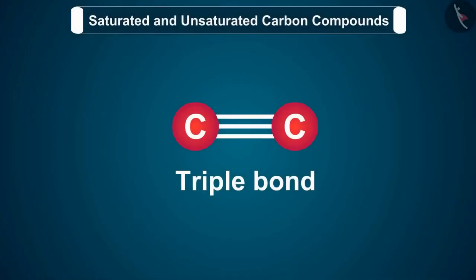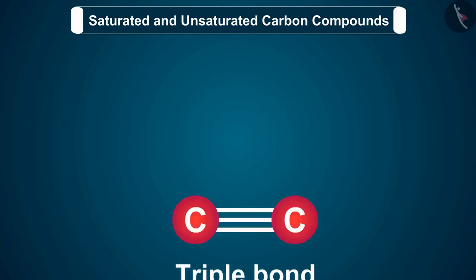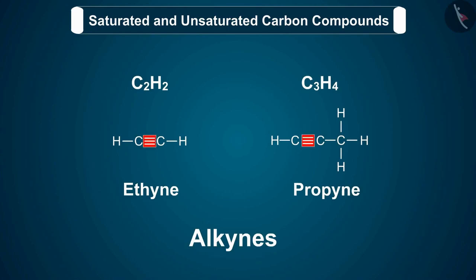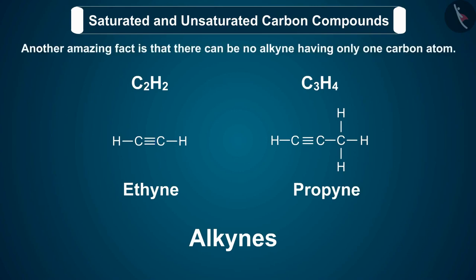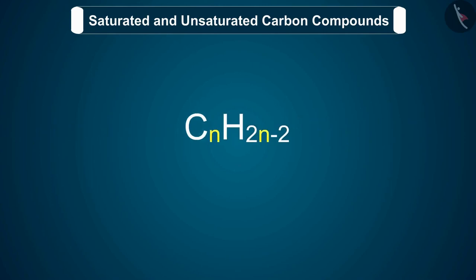Let us now discuss alkynes. These are unsaturated hydrocarbons in which two carbon atoms are connected by triple bonds. Alkynes contain a triple bond between carbon atoms, formed by the sharing of three pairs of electrons. There can be no alkyne having only one carbon atom. The general formula of alkynes is CnH(2n-2), where n is the number of carbon atoms.